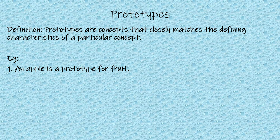The first example is: an apple is a prototype for fruit. We understood that fruit is a concept, and the best defining characteristic for fruit is an apple. Hence, an apple is a prototype for fruit.